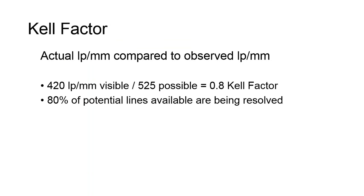One additional value you should be familiar with is the Kel factor. This is the ratio of the actual line pairs per millimeter seen to the theoretical number of scan lines in line pairs per millimeter rated for that specific monitor. Regardless of the monitor size, the number of horizontal lines on a television is 525 — this is the theoretical number. For this type of system, common with all cathode ray tubes, if only 420 lines are visible when measured, the Kel factor is 0.8, meaning that only 80% of the potential lines available are being resolved.